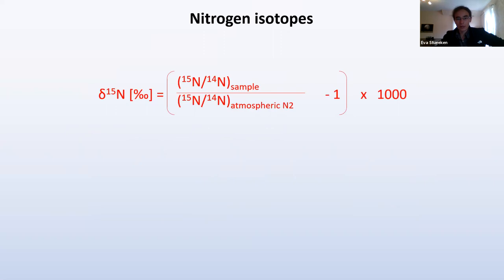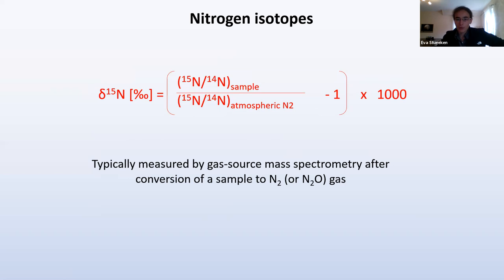Nitrogen isotopes: there are two stable isotopes, 15N and 14N. 14N is the more abundant one. We measure these like any stable isotope in the delta notation. What's a bit unusual is our standard — the reference standard is atmospheric air, so nitrogen gas in the modern atmosphere. Nitrogen is measured by gas source mass spectrometry, one of the so-called traditional stable isotopes, measured for several decades now. It requires converting whatever sample we have into a gas first — either N2 or in some applications N2O gas — which is then fed into the mass spectrometer.